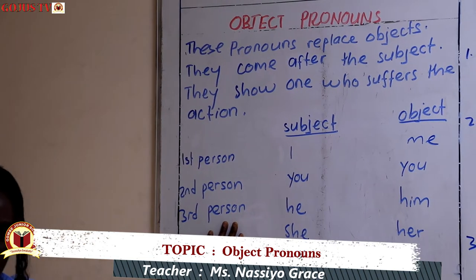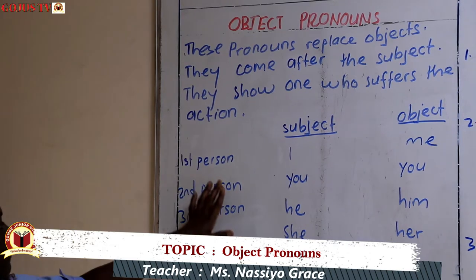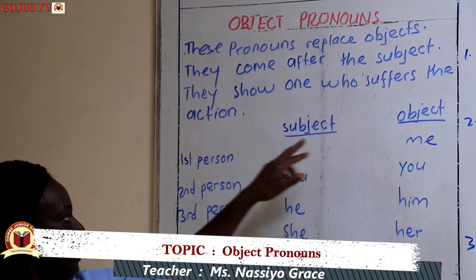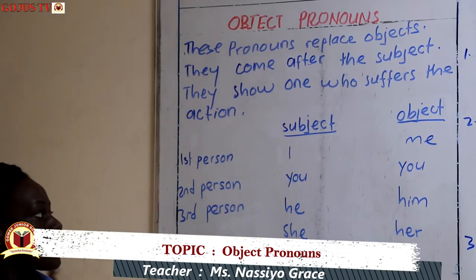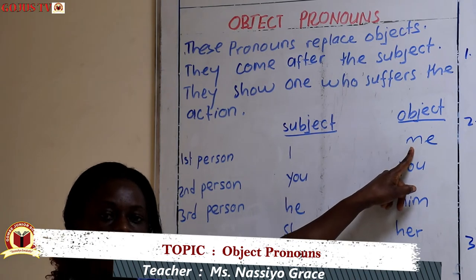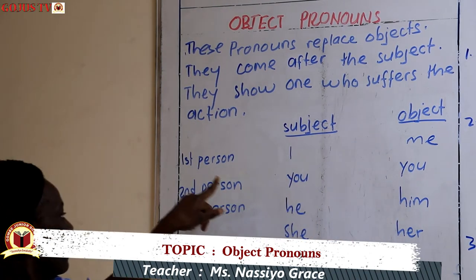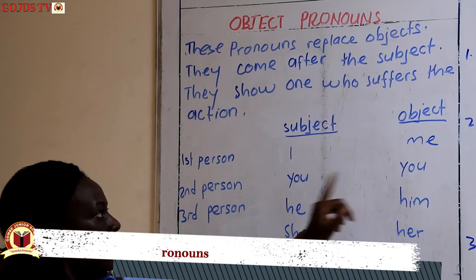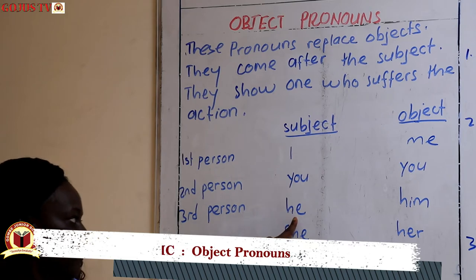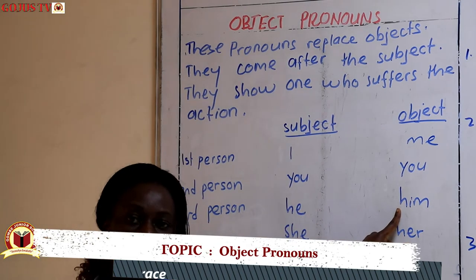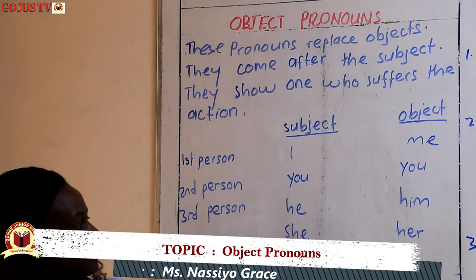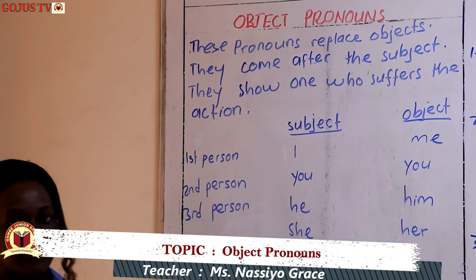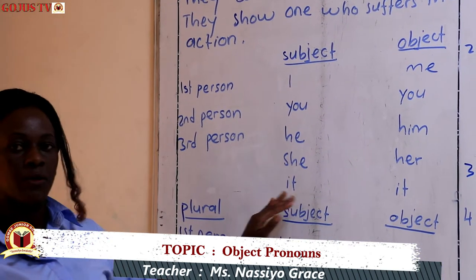Looking at the first person pronouns, we have the subject pronoun and the object pronoun. 'I' is the first person subject pronoun and it changes to 'me' when it becomes an object. The second person pronoun 'you' remains 'you'. In the third person, 'he' becomes 'him', 'she' becomes 'her', and 'it' remains 'it'. So 'you' and 'it' remain the same — they don't change.